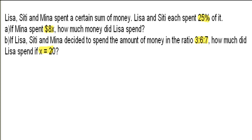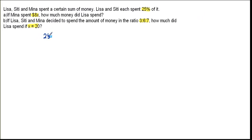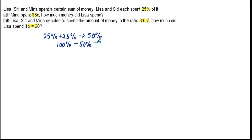This is a fairly simple question, so let's get down to solving it. If Lisa and Citi each spend 25% of the money, together they spend 25% plus 25%, which totals 50%. If Lisa and Citi together spend 50% of the sum of money, that means what is left would be the amount that Mina spent. So 100% minus 50% gives us what Mina spent, which is 50%.